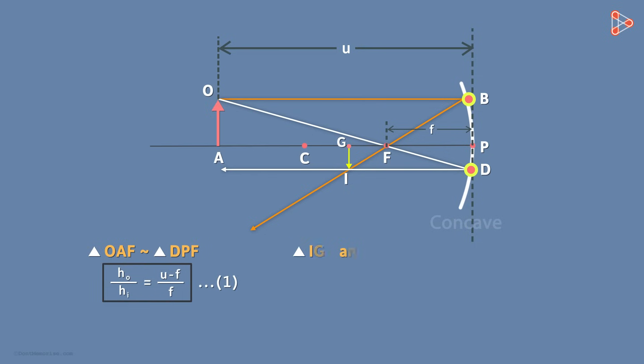Now consider triangles IGF and BPF. These two triangles are also similar again by the AAA test. I will leave this for you to verify. The ratios of their corresponding sides are equal. I will remove this ratio as it is not required. IG and BP are nothing but the heights of the image and the object. PF is the focal length f. So what's GF? GP is equal to GF plus FP. We know that FP is f. So what's GP? Yes, it's the image's distance from the mirror v. Therefore, GF is v minus f. Let this be equation 2.